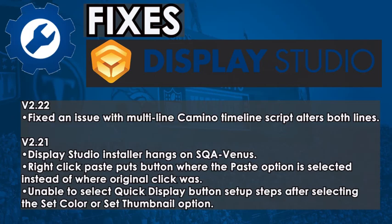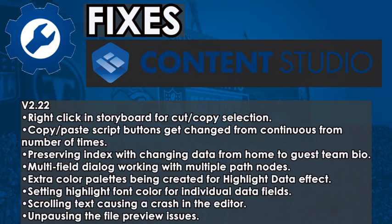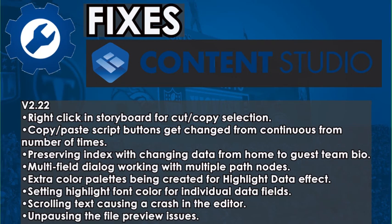Content Studio fixes in version 2.22: right-click in storyboard for cut/copy selection; copy/paste script buttons get changed from continuous to number of times; preserving index with changing data from home to guest team bio; multi-field dialogue working with multiple path nodes; extra color palettes being created for highlight data; effect setting highlight font color for individual data fields; scrolling text causing a crash in the editor; unpausing the file preview issues.